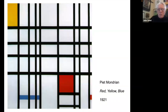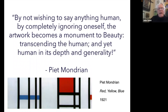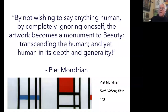And then maybe the purest of all these early abstract artists was Mondrian, who started out as a landscape painter inspired by Van Gogh, and then really reduced and refined — cleaned up his art to the point that it was verticals and horizontals and primary colors. Look at this fantastic statement he made. He had a definition of beauty that eliminated the figure. He says: 'By not wishing to say anything human, by completely ignoring oneself, the artwork becomes a monument to beauty, transcending the human, and yet human in its depth and generality.' It's a little paradoxical — it's almost as if you eliminate yourself and the human from your artwork, and then look what happens on the other side: you get a human creation.